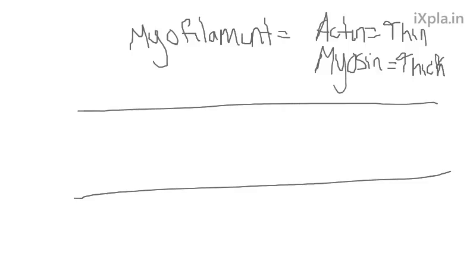The sarcomere is broken down into different segments or sections. We classify these sections based on the appearance of either actin or myosin. Under a microscope, actin is thin and myosin is thick — that's where the dark and light bands come from. First, we have something called the Z-disc. The Z-disc separates the sarcomeres; it contains them. It's not really made of actin or myosin — it's a different protein.